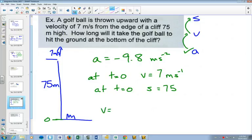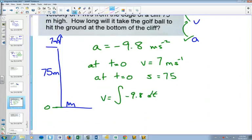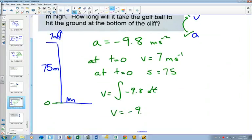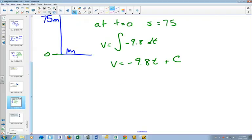So integrating once for our velocity, if I integrate negative 9.8 with respect to time, I'm going to get that my velocity is negative 9.8t plus c. And since we know our initial velocity is 7 when our time is 0, we're going to determine that c has to be 7. Just plug in 0 for time and 7 for v. And then it's obvious that c is equal to 7. So then our velocity becomes negative 9.8t plus 7.